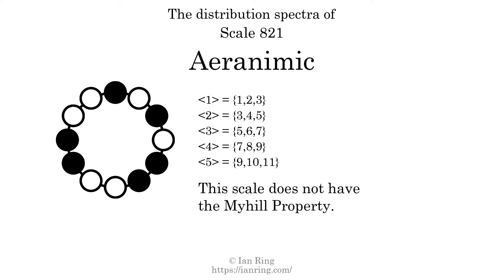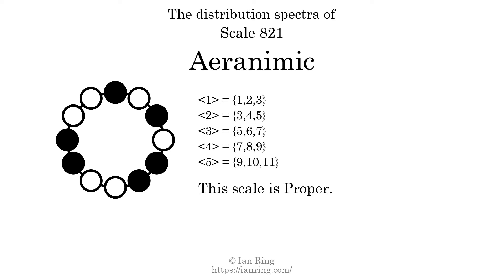If every spectrum has exactly 2 specific intervals, we call that the Myhill property. This scale does not have the Myhill property. Since the generic interval ranges do not overlap, this scale is proper. But it is not strictly proper because some specific intervals appear in more than one spectrum.